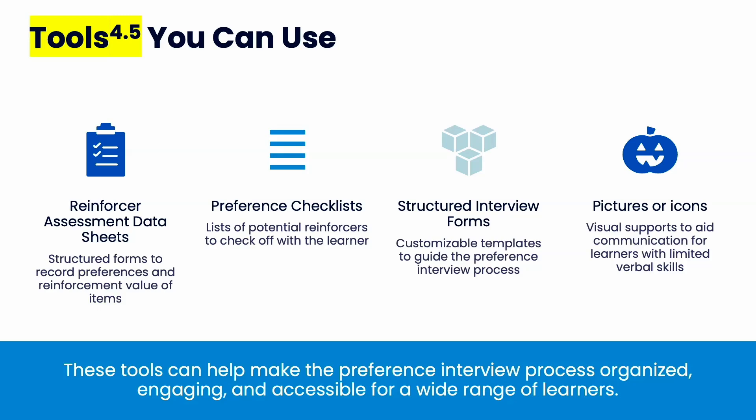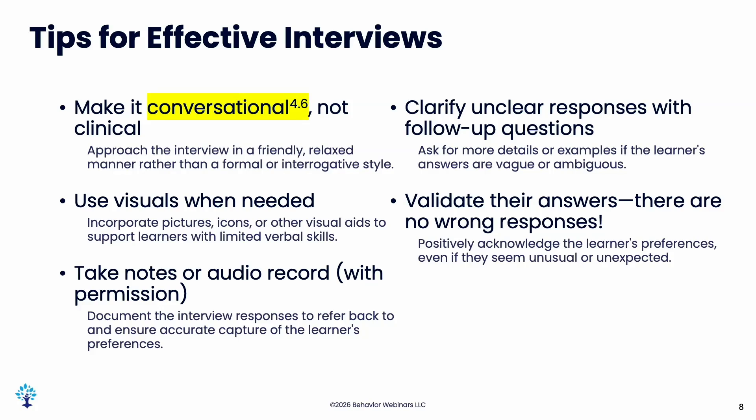Make the interview really conversational and fun. Make sure it's relaxed and that they're in a good mood — you don't want any behaviors to have just occurred. Use visuals and show them things; I've had to pull things up on my phone when they don't understand a word. Take notes or record audio if you have permission. Clarify unclear responses with follow-up questions — if they're being vague, ask what you could change to make them like it. For example, if they say maybe they'd like recess time, ask where they'd want it, and they might say in the sensory room or library. Then you just modify accordingly.